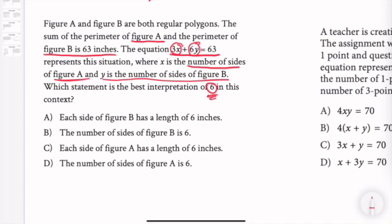So how do we find the total perimeter? We would take the number of sides and multiply it by 6, because the number of sides is just y. So 6 times the number of sides is going to give us the total perimeter for B.